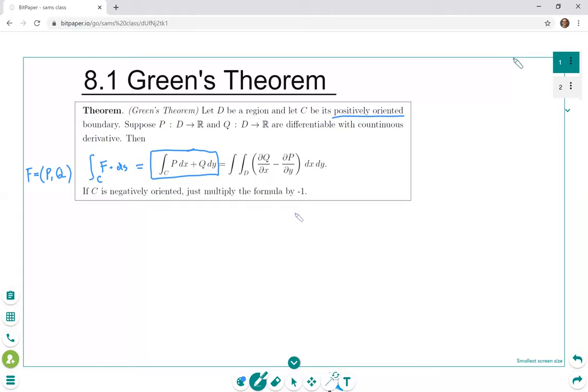And then if C is negatively oriented we just multiply by minus one. Again we'll talk about orientation in a second.